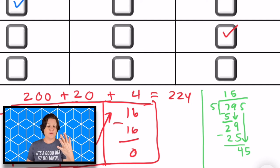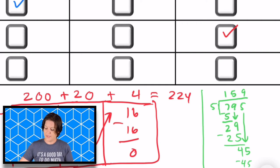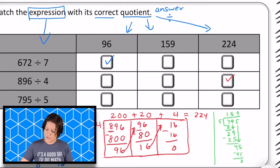5, 10, 15, 20, 25, 30, 35, 40, 45. 9 times, which would be 45. Subtract and we get a 0. So our quotient is 159, which is that middle one.